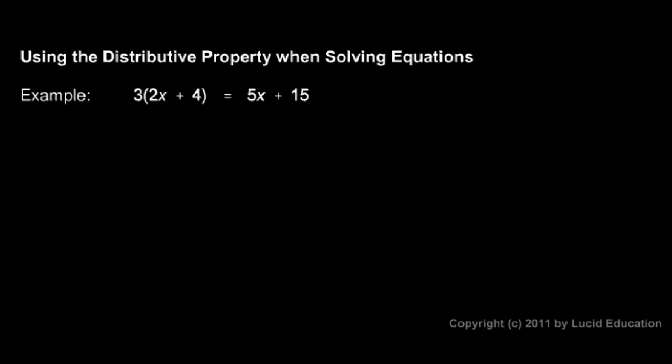So we have to distribute the 3. We have to multiply the 3 by the 2x and by the 4. That 3 gets multiplied by each term in the parentheses there.